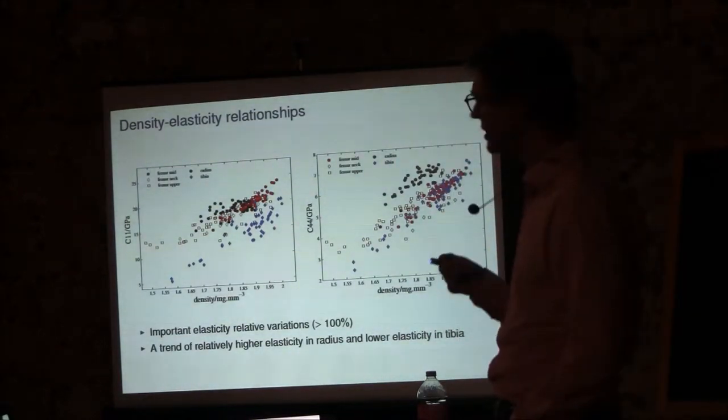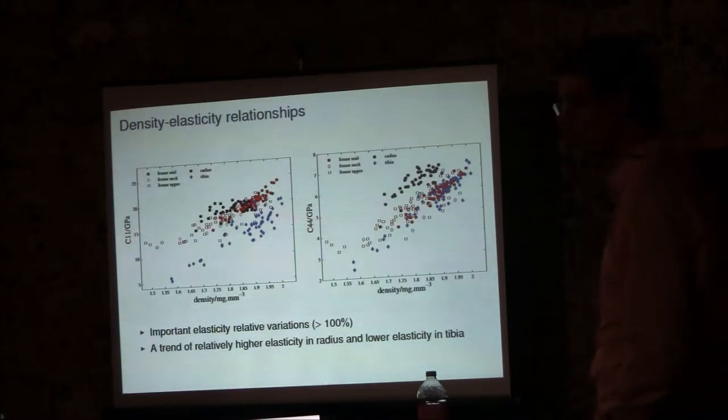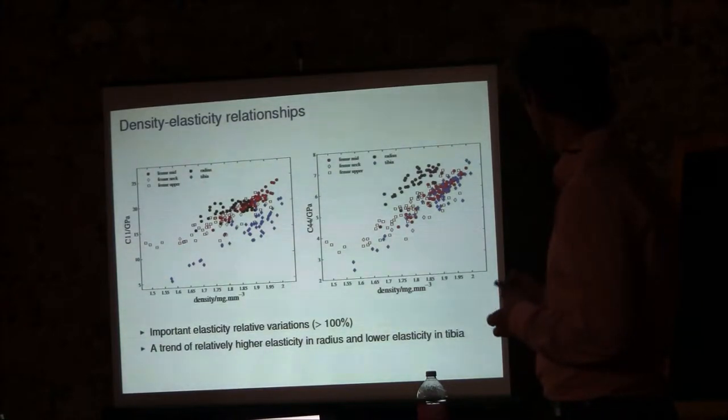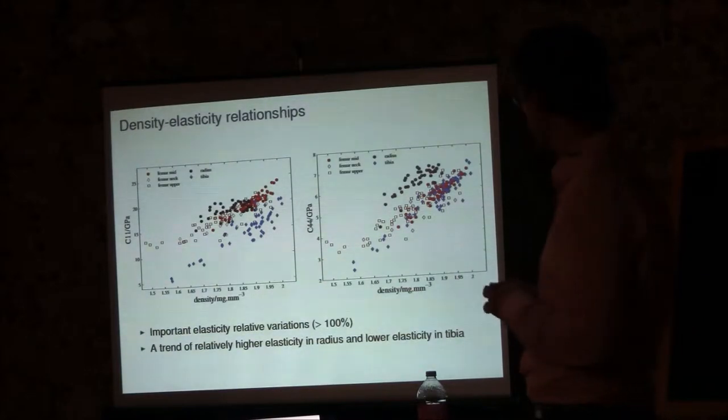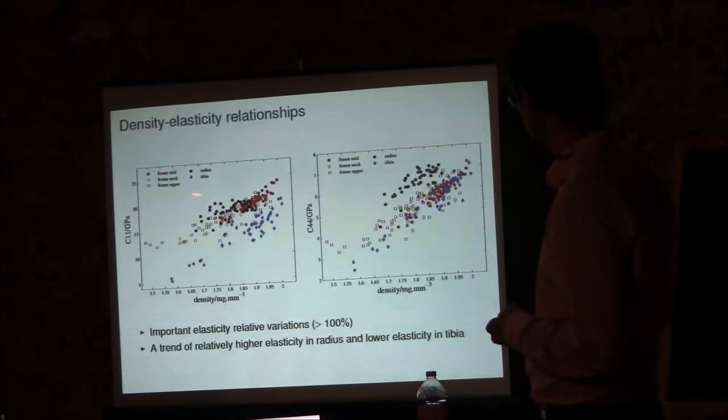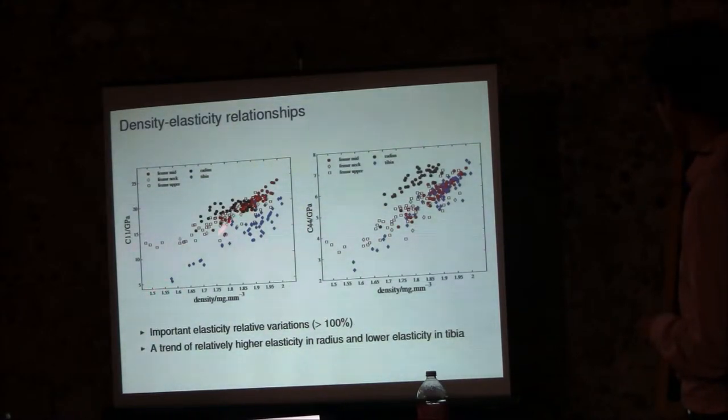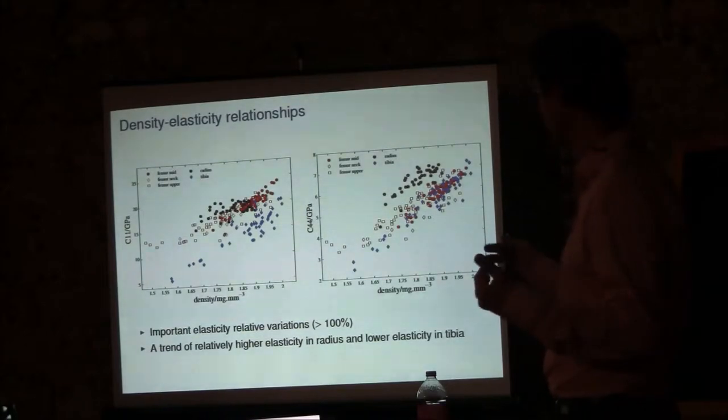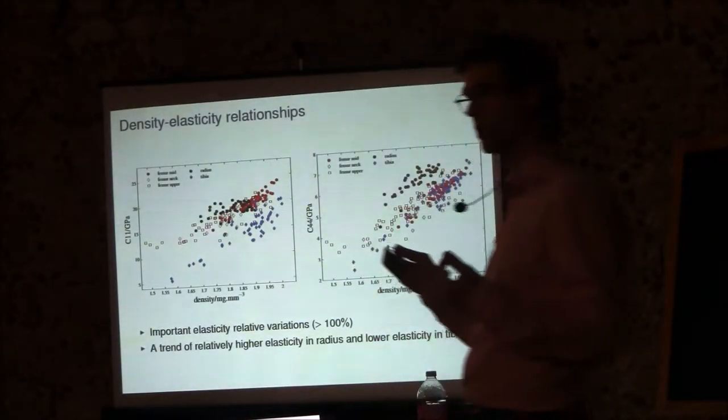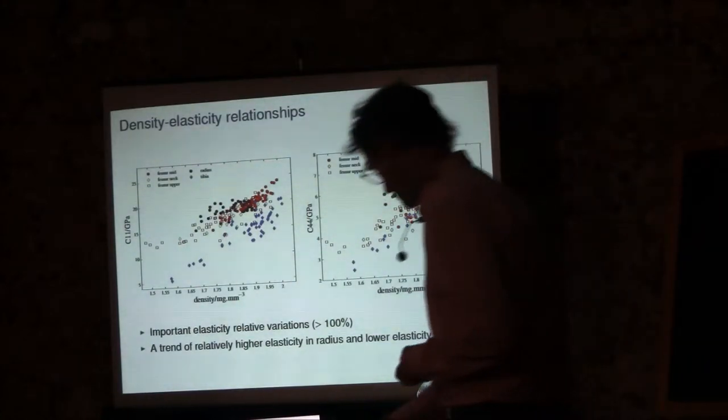The first way to look at the data is to look at the relationship between elastic properties and the density. So this is an example for coefficient C11, which is one of the compression coefficients of the bone, and C44, which is one of the shear coefficients. For the different bones, the red is for the different sites at the femur, and the blue is for tibia, and the black is for radius. The first thing that we see is that if we look at the entire range of density of the cortical bone sample, there is a variation of more than 100% of the elastic properties in the range. So you cannot think of cortical bone as being a material with a constant elasticity. And we see here, interestingly, for the tibia, lower elasticity for the same density, and for the radius, a higher elasticity. And we cannot explain this at the moment.